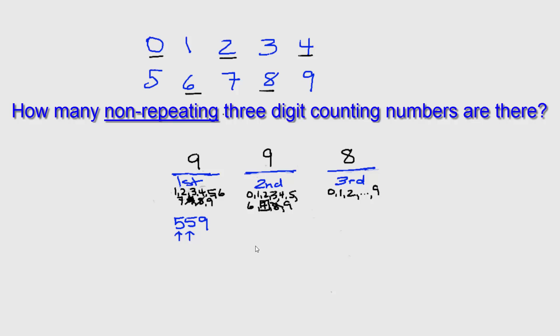So according to the fundamental counting principle, we can multiply 9 times 9 times 8. Let's see, that would be 81 times 8, which would be 648 different possible 3-digit numbers that are non-repeating.